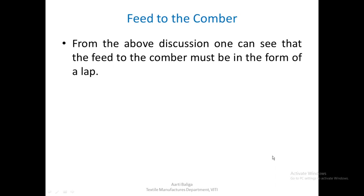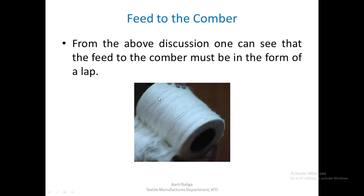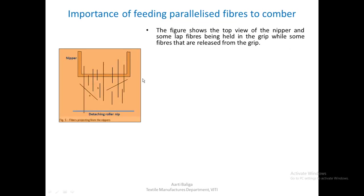From the above discussion, we can see that the feed to the comber must be in the form of a lap. The first function of comber preparatory is to produce such a lap. Additionally, feeding parallelized fibers to the comber in the form of a lap is very important. The figure shows a top view of the nipper — the first grip before combing takes place — which is a plate gripping the fibers.